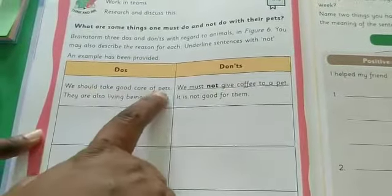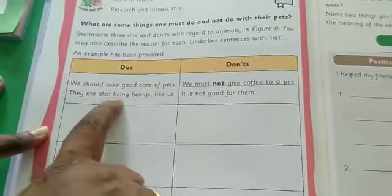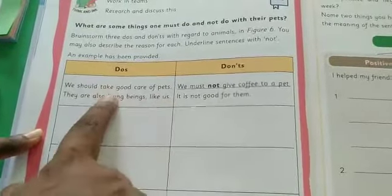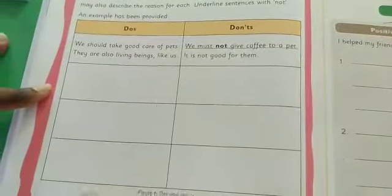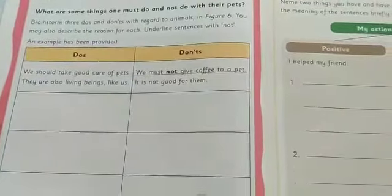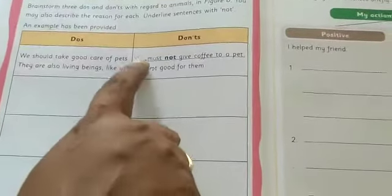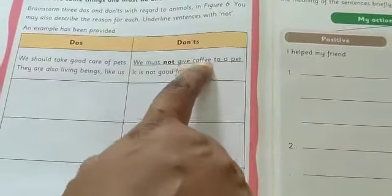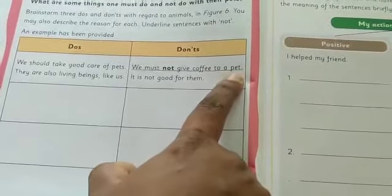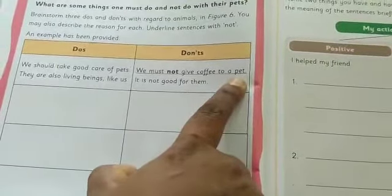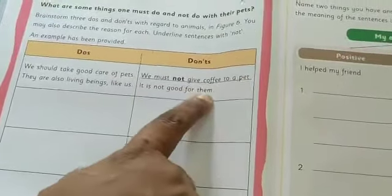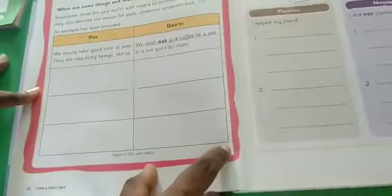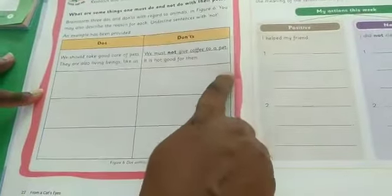So do's: we should take good care of pets — they are also living beings like us. For don'ts, what we must not do with our pets, you have to write here. For example: we must not give coffee to a pet — it is not good for them. So write some negative sentences about what we should not do to our pets, and underline the negative sentences.